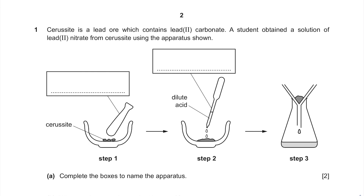Cirrusite is a lead ore which contains lead 2 carbonate. A student obtained a solution of lead 2 nitrate from cirrusite using the apparatus shown. Complete the boxes to name the apparatus. You must learn all your key chemistry equipment off by heart — these are easy marks you don't want to miss. The thing which does the crushing is known as the pestle, and the bowl that you do the crushing in is the mortar. What are we using to drip that dilute acid? Well, that is a pipette.